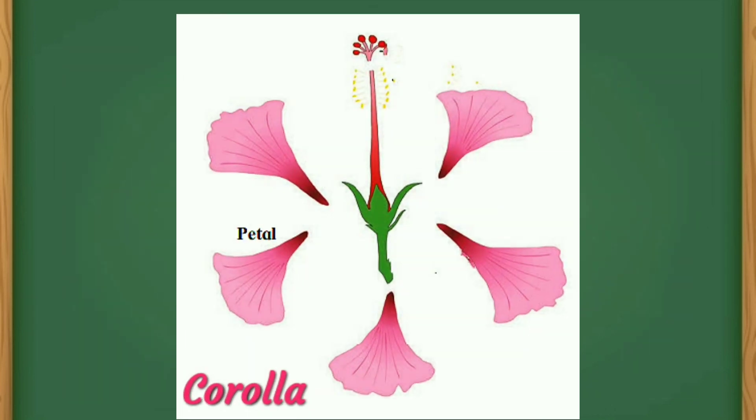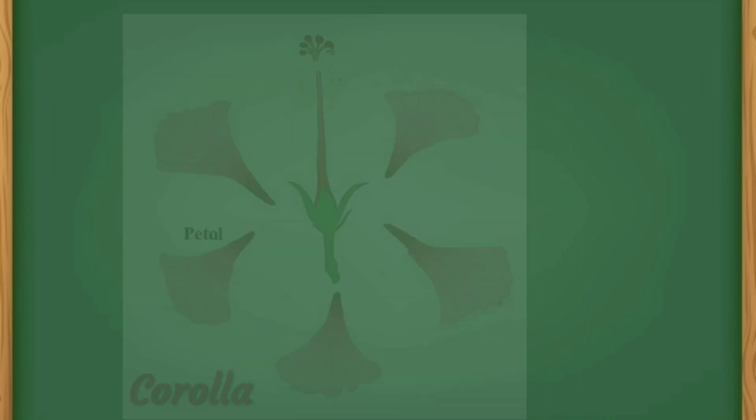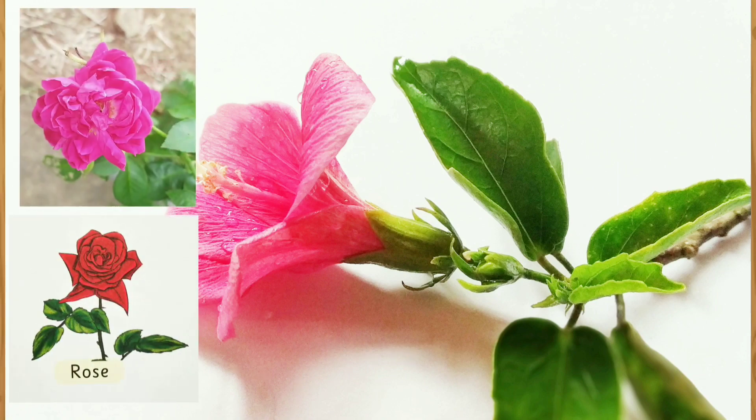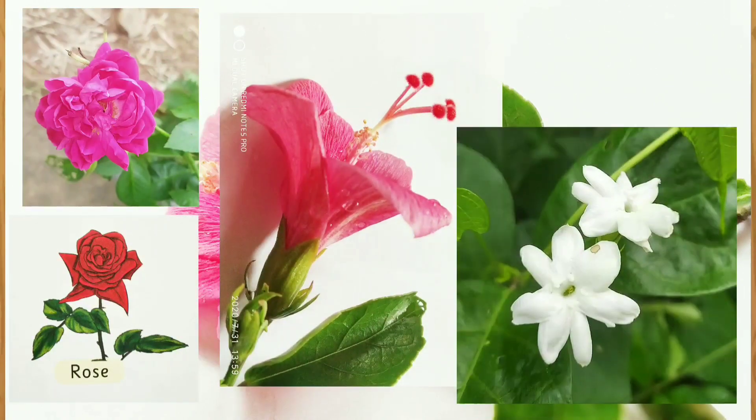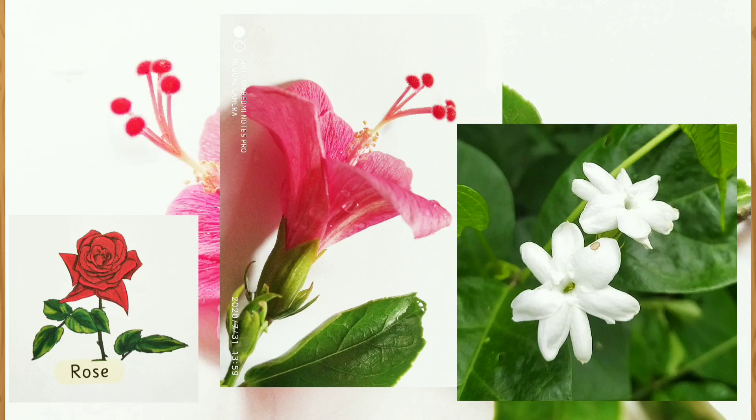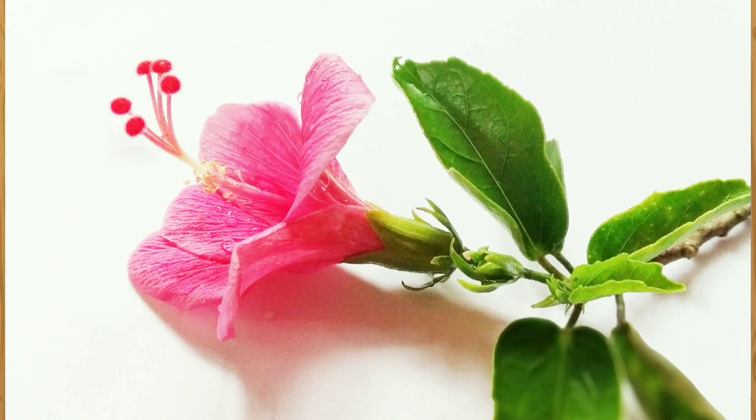The next part is corolla. Corolla manches dalapunja. This is made up of colorful parts called petals. The shape, color, and the smell of the corolla is different in different flowers. For example, in the rose, chrysanthemum, hibiscus, mogra, kaneer, tagar, etc. In these flowers, the smell, the color, and the shape is different according to the flowers.